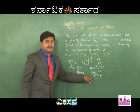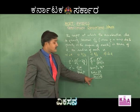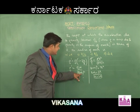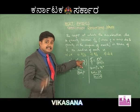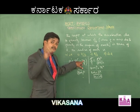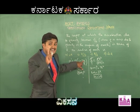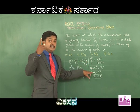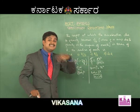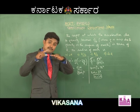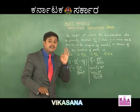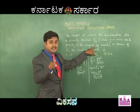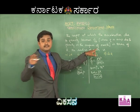Remember, dear students, this height H is measured from the surface of earth, not from the center of earth. So at a height equal to twice the radius of earth above the surface of earth, the value of g gets reduced to one-ninth of its value on the surface of earth. Option A, 2R, is the correct answer.